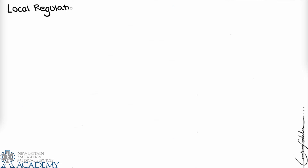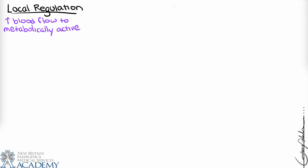There are three ways the body adjusts for changes in blood pressure or blood volume: local regulation, neural regulation, and hormonal regulation. Starting with local regulation, also called auto-regulation, the body shunts blood to tissues that are more metabolically active. In metabolically active tissues, there is an increase in oxygen demand and CO2 production, leading to increased blood flow to those tissues.